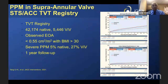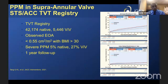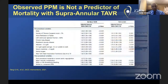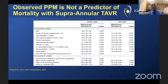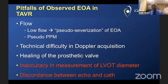In the Swiss TAVI trial comparing balloon expandable and supra-annular self-expanding valves, severe PPM was more common with the balloon expandable valve, but was not associated with one-year mortality in the matched analysis. A study by Dr. Tang of the TVT registry in supra-annular self-expanding valves showed that even though PPM occurred more so with smaller valves, it was not associated with worse outcomes, whether in the valve-in-valve cohort or the native cohort. So observed PPM was not a predictor of mortality in supra-annular transcatheter valves.